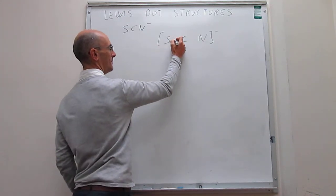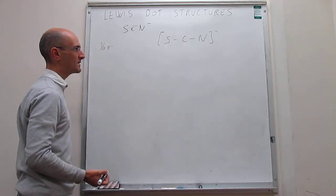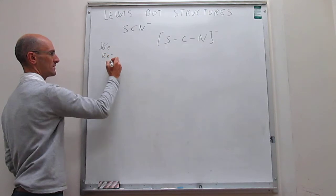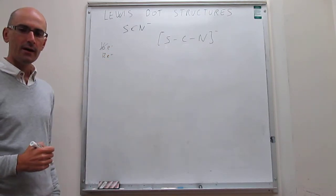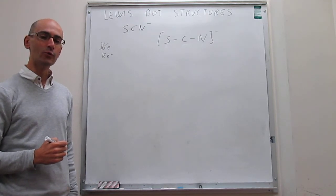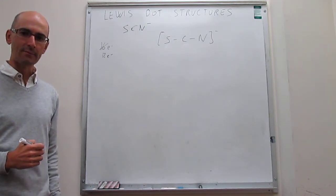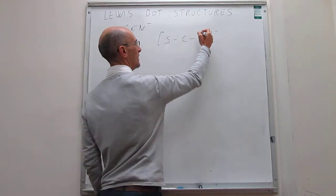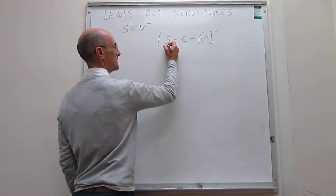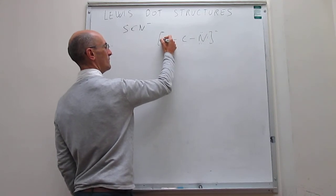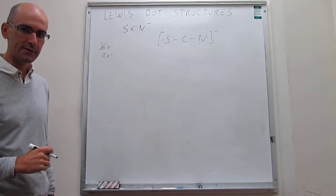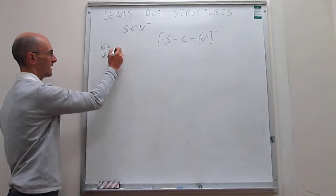The first electrons go to draw bonds between the central and the terminal atoms, and that uses four electrons, leaving 12 electrons left over. We take these 12 electrons that are left over and use them to draw lone pairs on the terminal atoms first. So we have two, four, six on one terminal atom, and two, four, six on the other — a total of 12 electrons placed as lone pairs, meaning I have none left over.